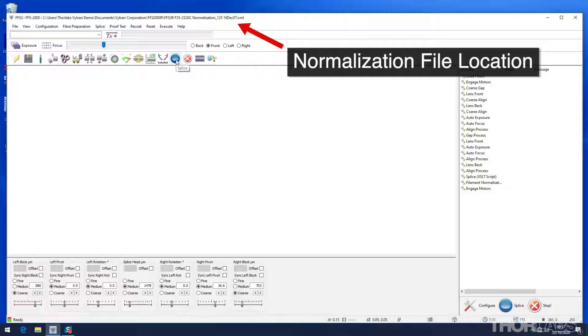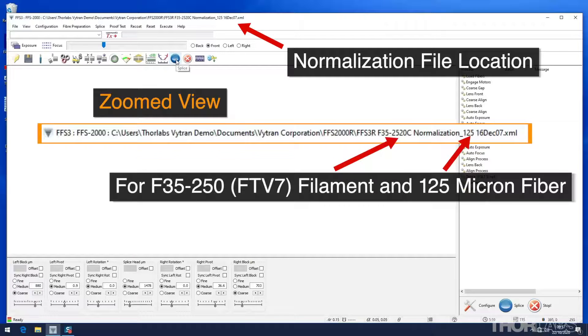Normalization files are preinstalled on the computer that ships with the unit. Normalization files are for a specific type of filament and fiber diameter.